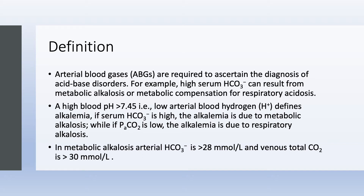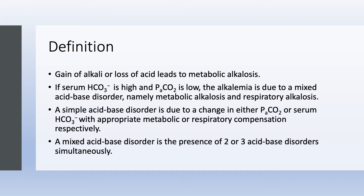In metabolic alkalosis, arterial bicarbonate is over 28, while the venous total CO2 — what you get on a basic metabolic panel — would be above 30 mmol or 30 mEq per liter. Gain of alkali is equivalent to loss of acid, and either way you get metabolic alkalosis. In metabolic alkalosis, serum bicarbonate is high, and respiratory compensation means PaCO2 will go up.